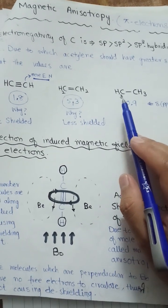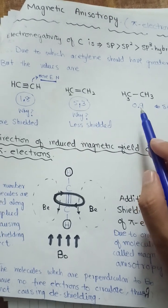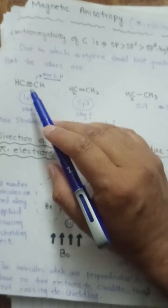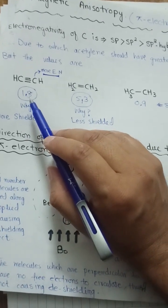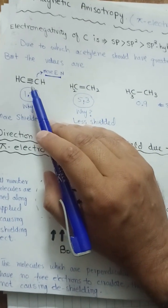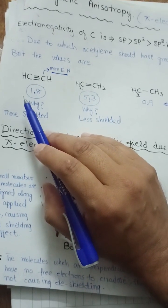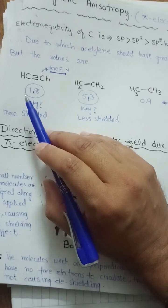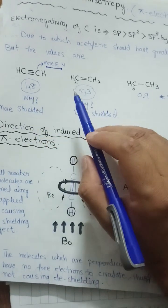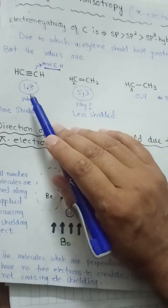If we look at the NMR signals of ethane, the delta value is 0.9 ppm, while in ethylene it is 5.3 ppm, but in acetylene it is 1.8 ppm. If we look at the sequence of these molecules, acetylene should be more deshielded because of the electronegative carbon atom, so its delta value should be greater. Yet the value of 5.3 ppm for ethylene is higher than that of acetylene at 1.8 ppm.